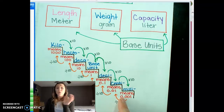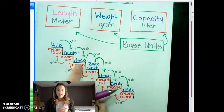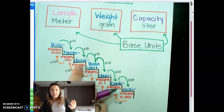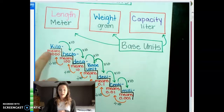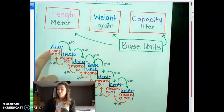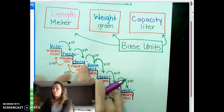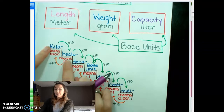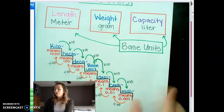For example, if I'm starting with decagrams and want to know how many kilograms that is, I'm going up the ladder, which means I'm dividing. I would move up one step, then another — so I divide by 10 twice.